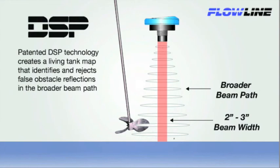This gives Flowline ultrasonic sensors a 2-3 inch minimum beam width across the measurement range and increases the installation flexibility of the sensor. This allows Flowline ultrasonic sensors to measure reliably in tight places or applications with obstructions.